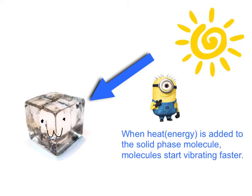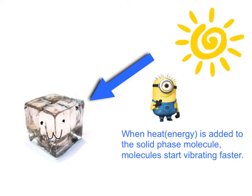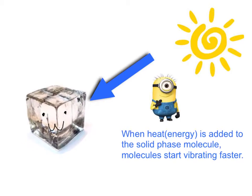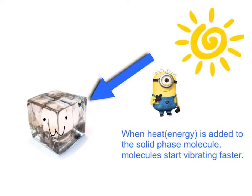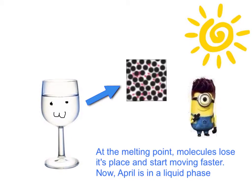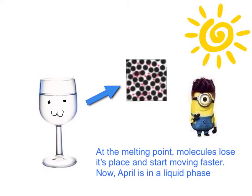Now, April and minion are outside under the sun. When I'm heated by the sun, molecules that form me start moving faster and faster. Getting heated means getting energy from the sun. And at the melting point, molecules lose their place and start moving faster. So I'm in a liquid phase right now, and this transformation is called melting. You have indefinite shape and definite volume.